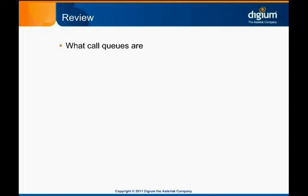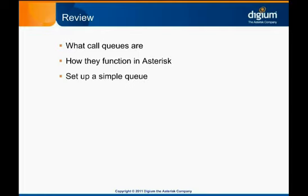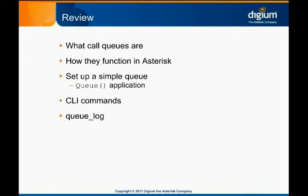At this point, you should have a basic understanding of what call queues are and how they function in Asterisk. You should know how to set up a very simple queue and understand how to set up the dial plan to use it. You should also know how to get information about your queues from the CLI or from the queue log. We'll now move on to the next module, where we can see how to populate the queue with members. We'll be distributing calls in no time.